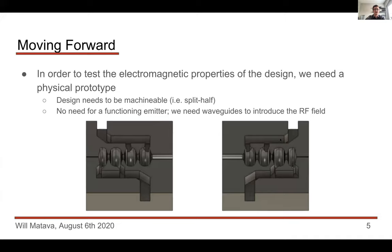Moving forward, we'd like to be able to test the electromagnetic property design. In order to do this in lab, we need an actual physical prototype. It needs to be actually machinable, and the way we get around that is basically splitting our design in two and carving out half cavities, and then we take this and sandwich it together to create full cavities.